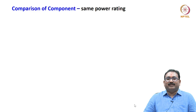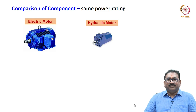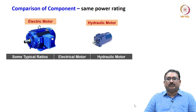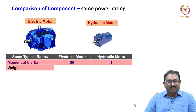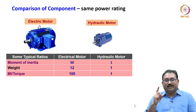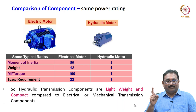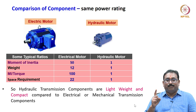Here are some examples of how fluid power components are compact and lightweight. Considering an electric motor and hydraulic motor of the same power rating, the moment of inertia ratio is 50:1, weight ratio is 12:1, moment of inertia to torque ratio is 100:1, and space requirement ratio is 22:1. So hydraulic transmission components are lightweight and compact compared to other transmission methods.